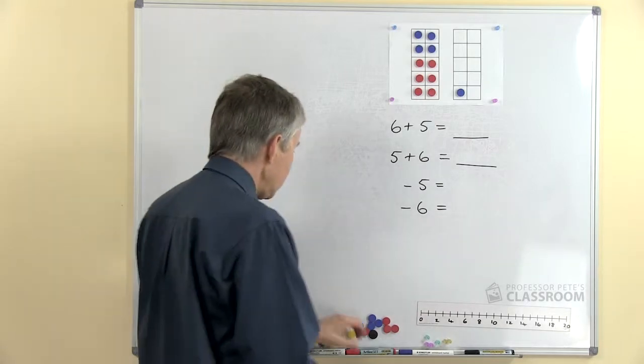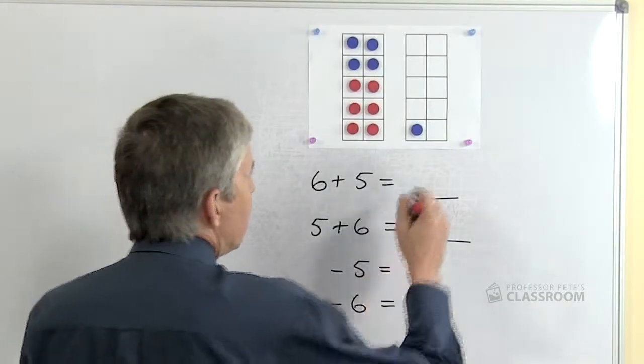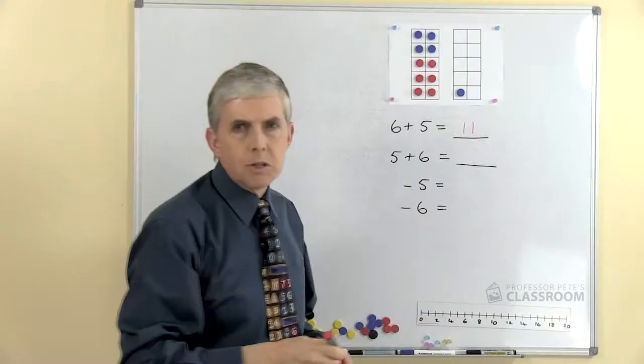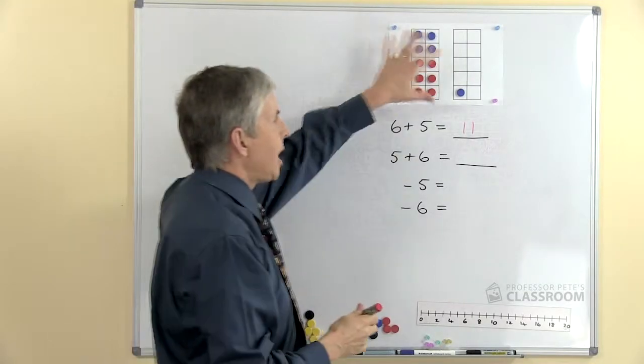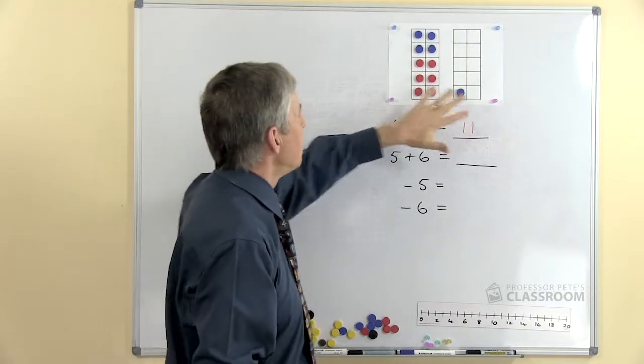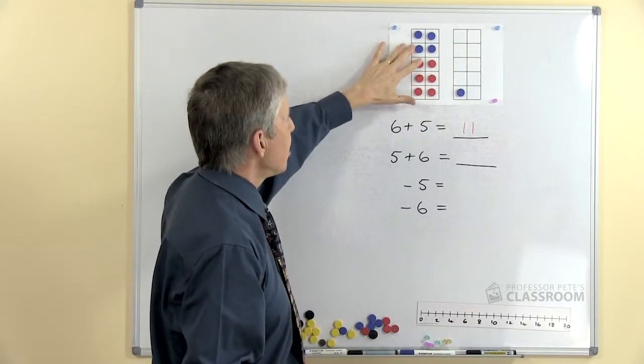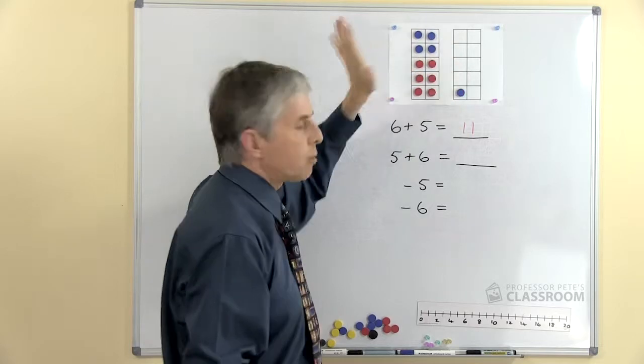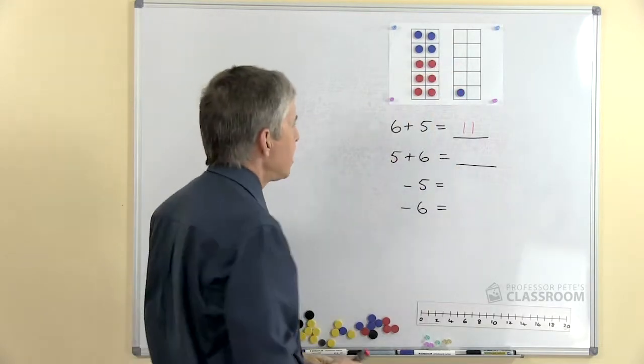So we're looking at this example: 6 plus 5, which of course is 11, and we can illustrate that with two 10 frames. However you do it, it doesn't matter—10 frames happen to be my favorite resource. So we've got six red ones, five blue ones, we can see that's 11, straightforward, that's easy.